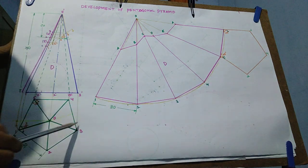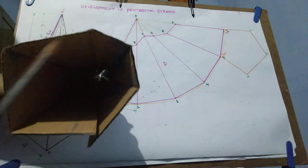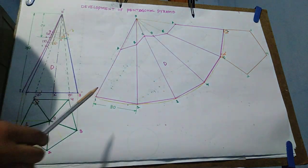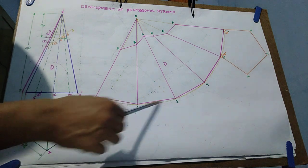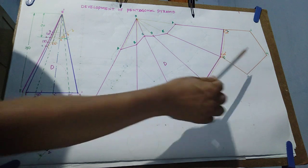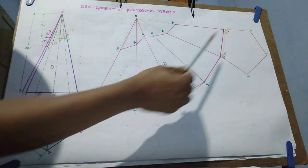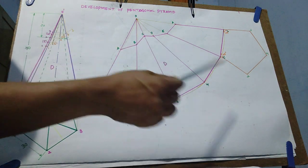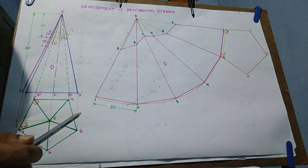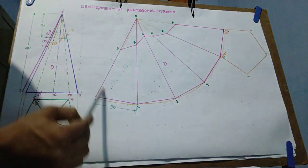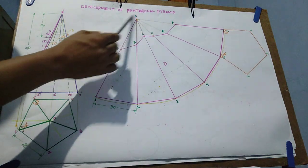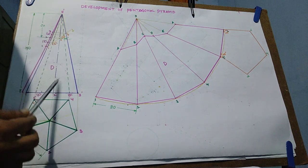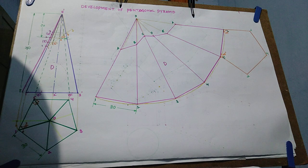Draw the base also. The bottom is closed with a plane, and that plane is exactly a pentagonal plane. To represent that pentagonal plane, you can draw it anywhere on the side — here, here, or at any place. The pentagonal shape is drawn at the end of the development using the same measurements: 108 degrees included angle, side length 30 mm. Finally, this is the development with the base, showing the cut portion after cutting by the sectional plane on this solid. This is the development of the pentagonal pyramid. Thank you.